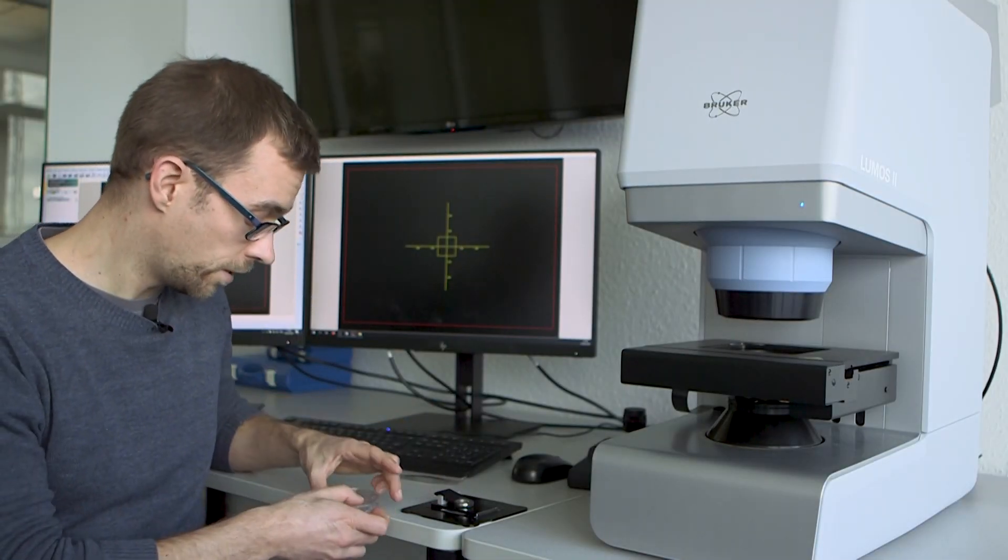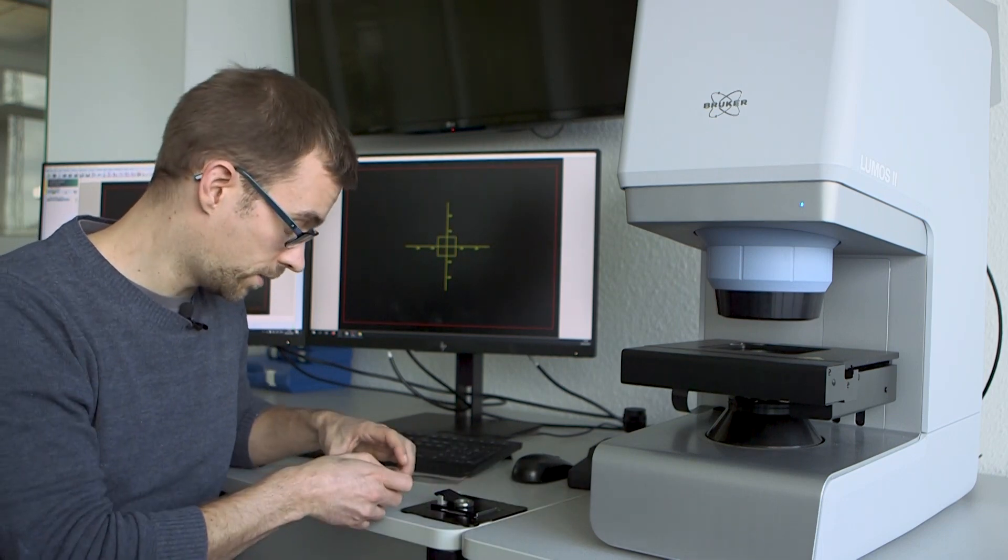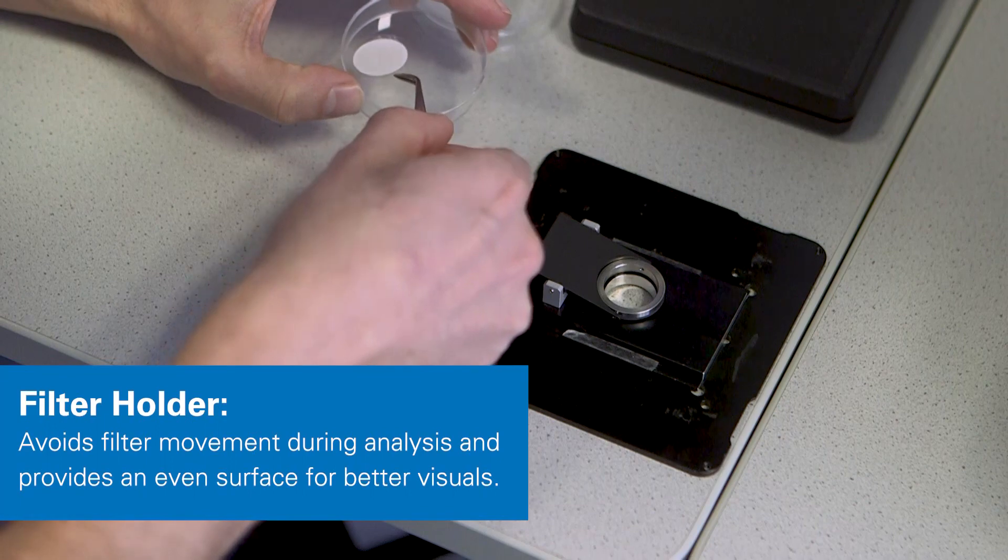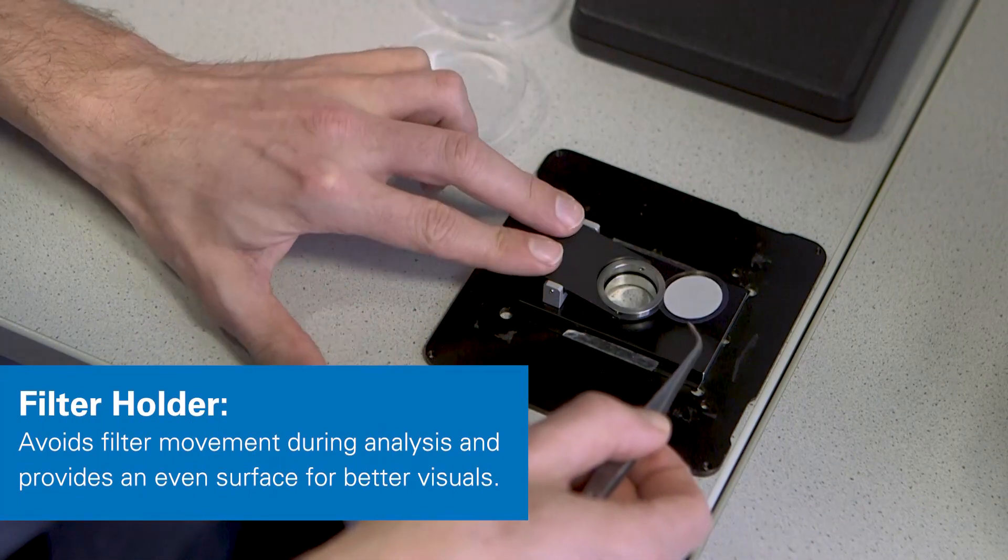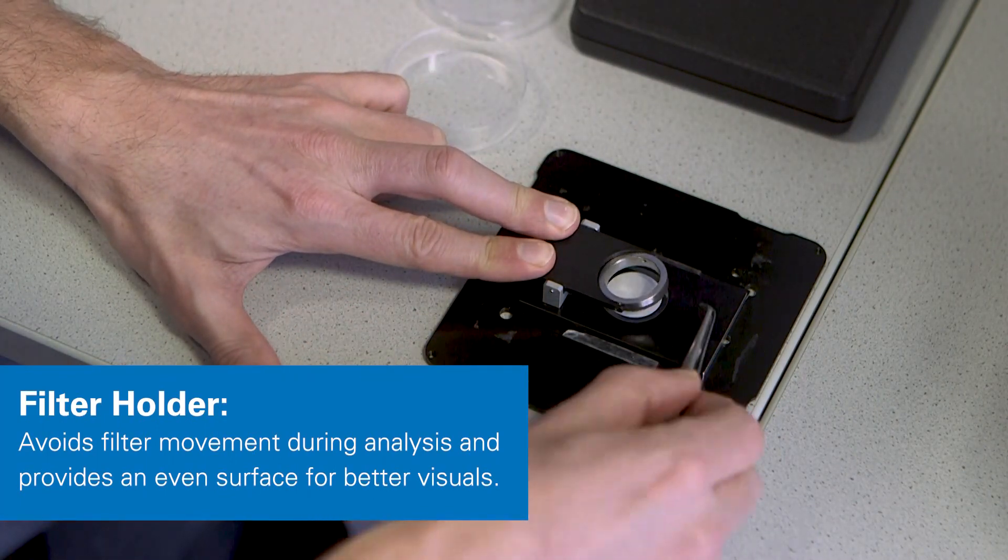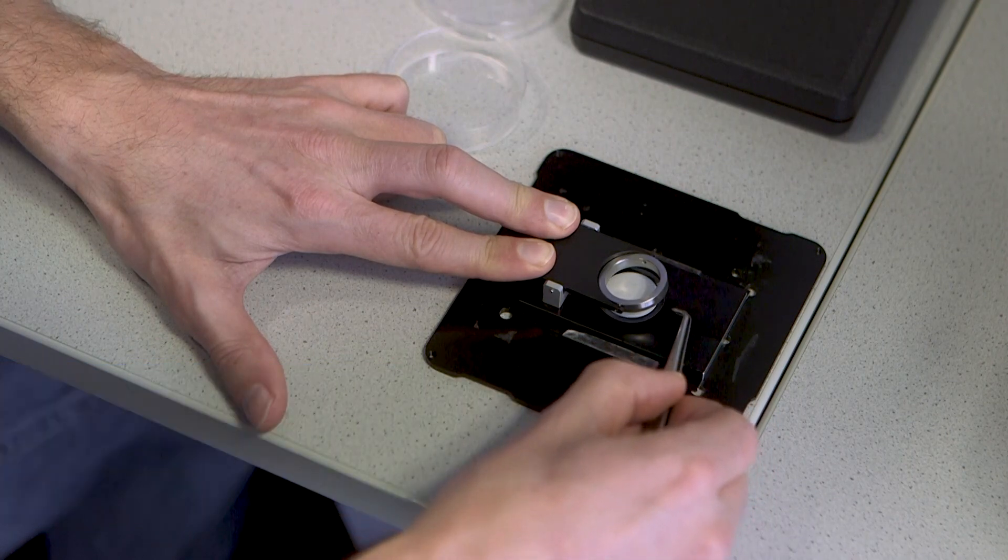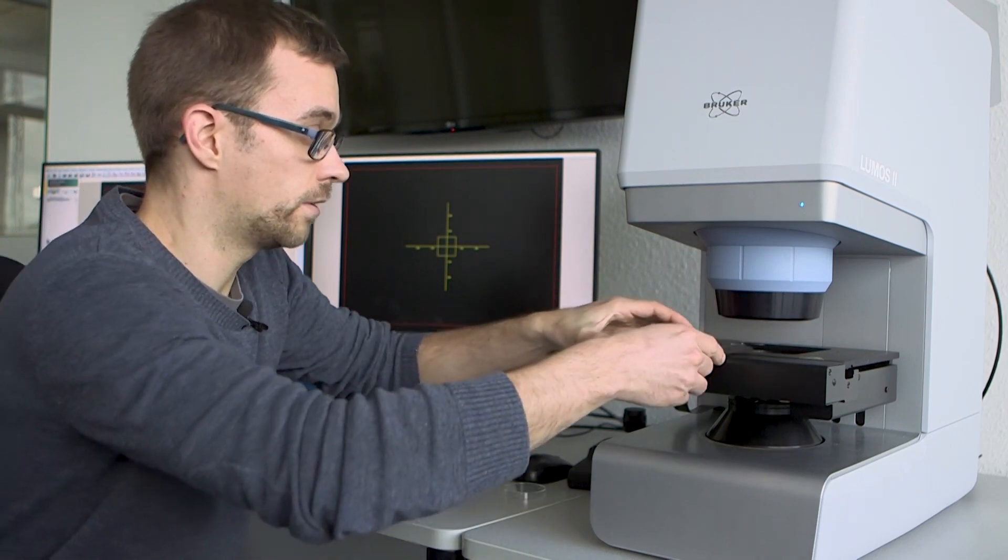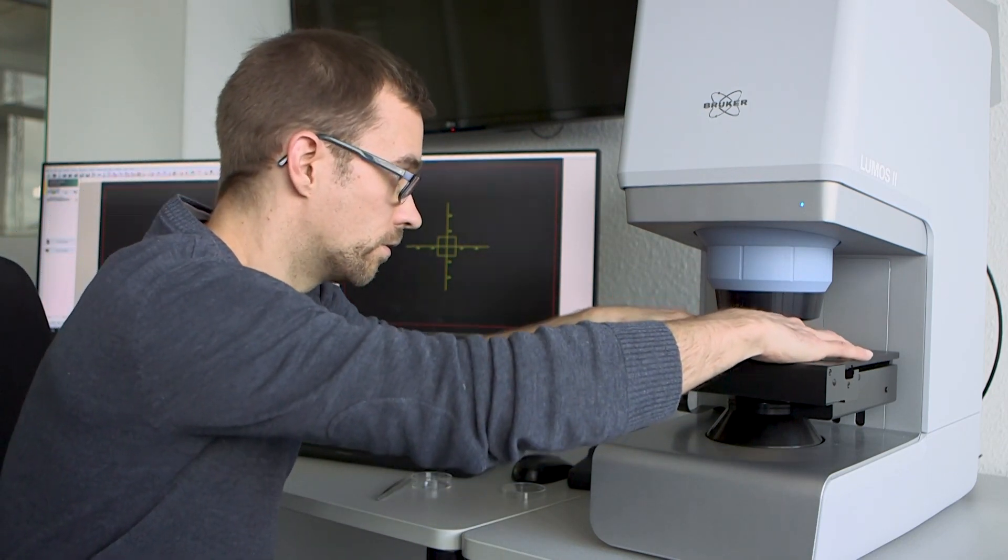Now that our sample is dry, we can place it in the filter holder to fix it for the measurement. It's an easy to use tool, you just lift this clip, place the filter, release and you can place it onto the microscopy stage.